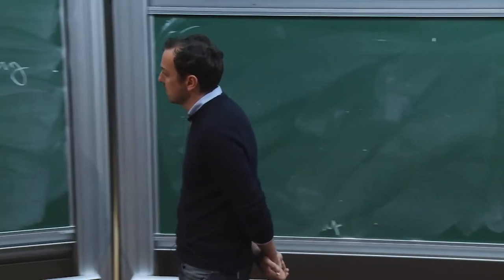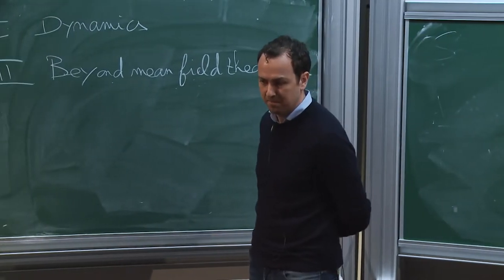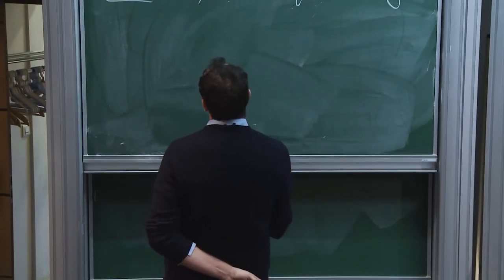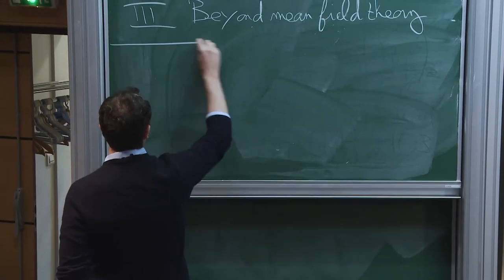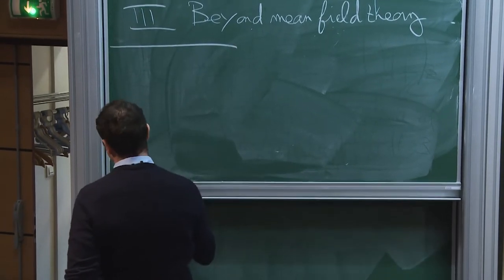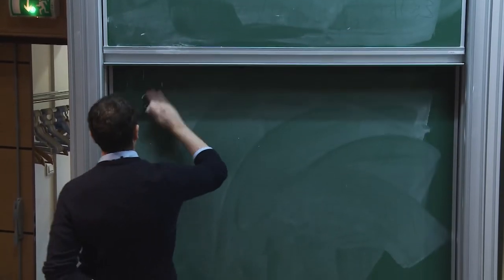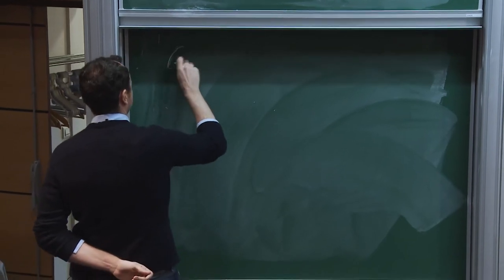Namely, the models of interest for physicists are when the amount of randomness is much smaller. Can you create random matrix statistics with a much smaller amount of randomness? We will talk about it in the last lecture. So today, let's talk a little bit about the Gaussian ensembles first.